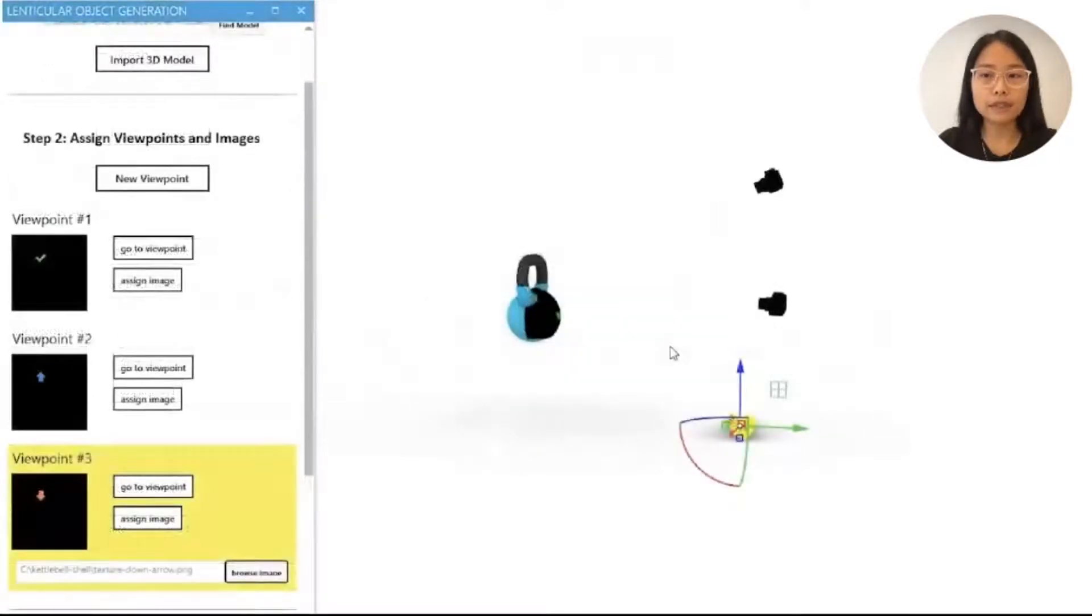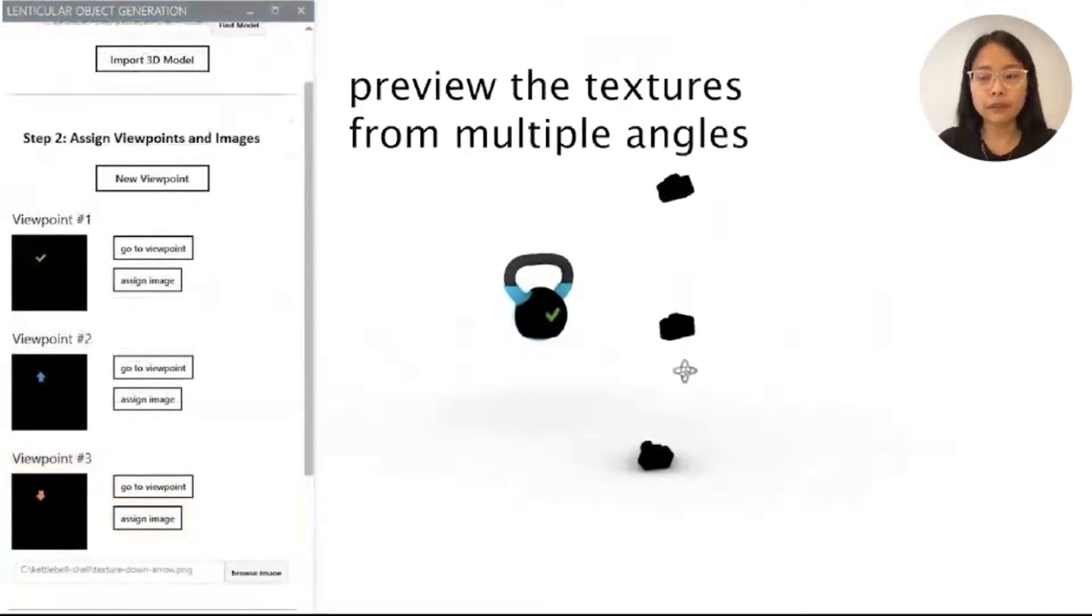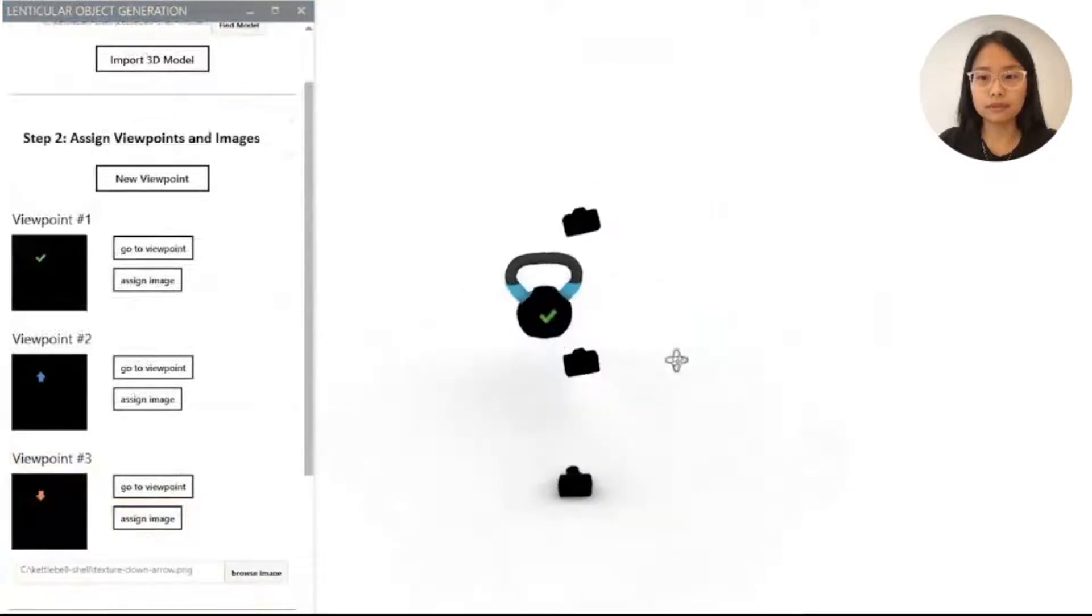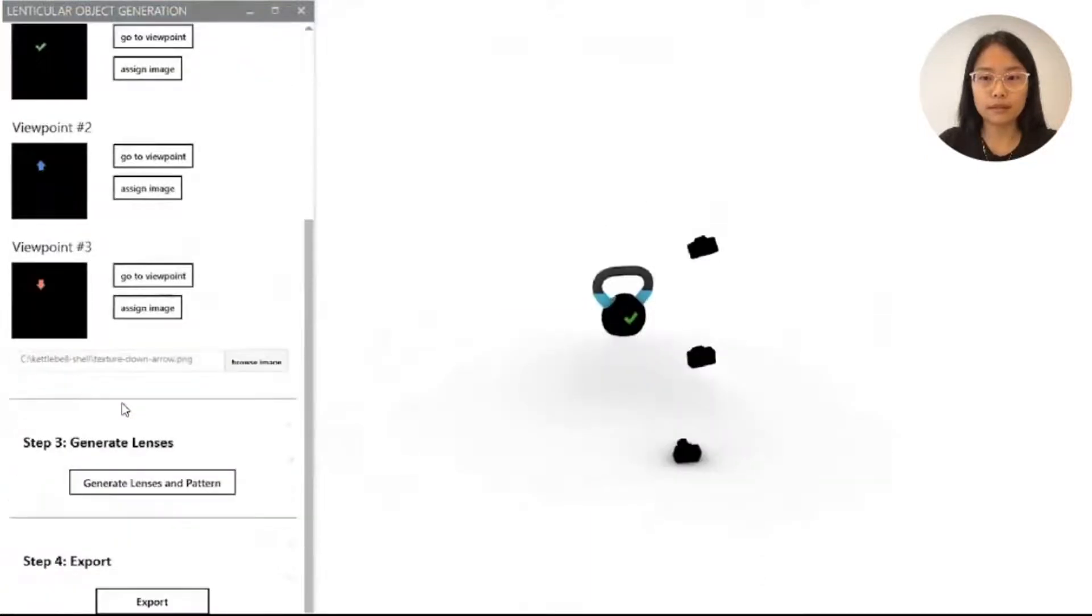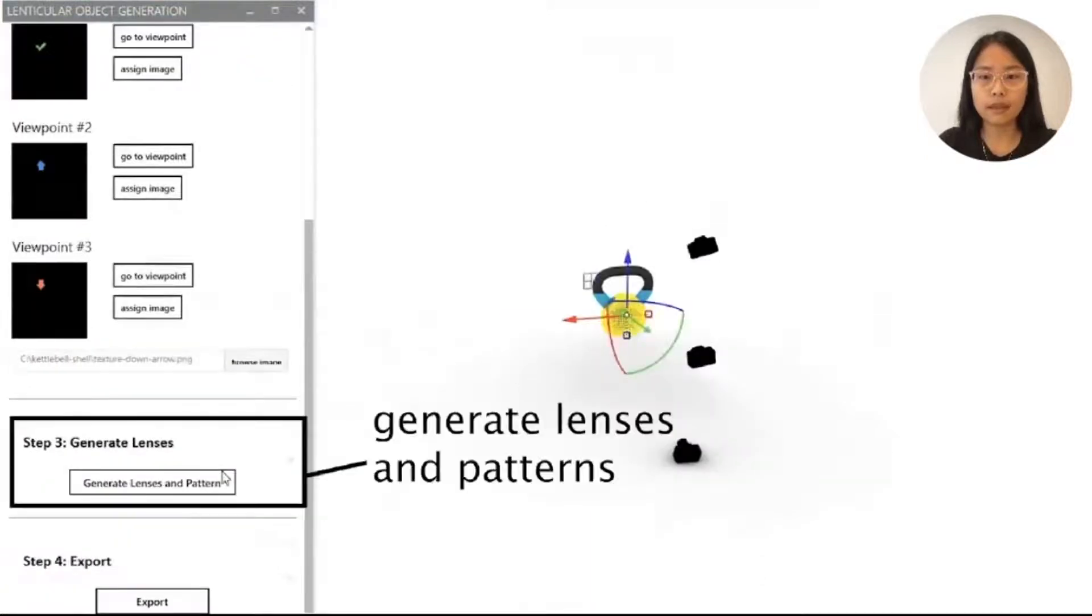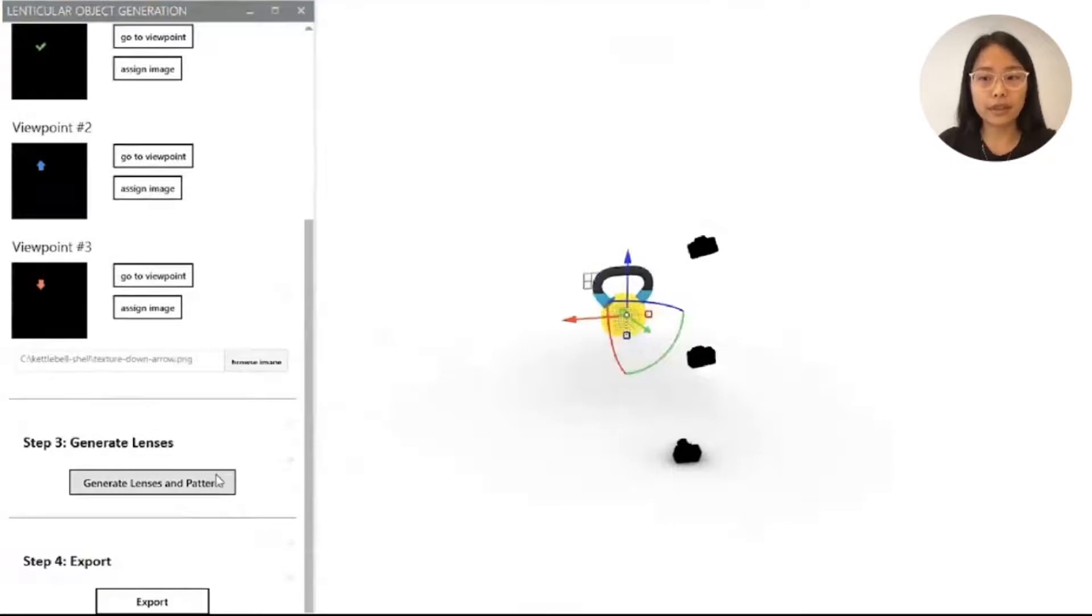Now that I have set up all three viewpoints, I can then preview the appearances from different angles. The lenses and color pattern are then generated automatically.